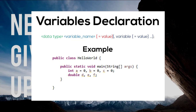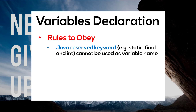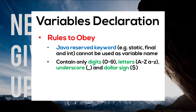When it comes to variable declaration in Java, there are also a couple of rules to obey. Java reserved words such as static, final, and int cannot be used as a variable name. Variable names can only contain digits, letters, underscore, and the dollar sign. And lastly, the first character of a variable name must be a letter. Although Java allows you to begin a variable name with a special character, it has a special purpose so it's better to avoid that for now.